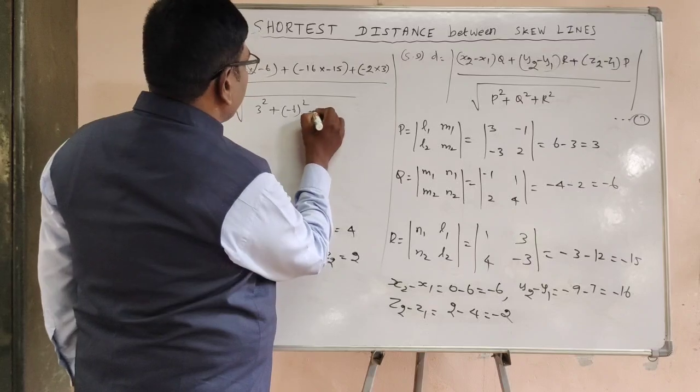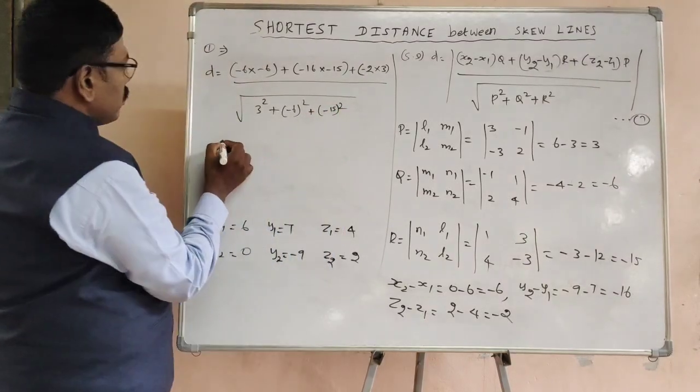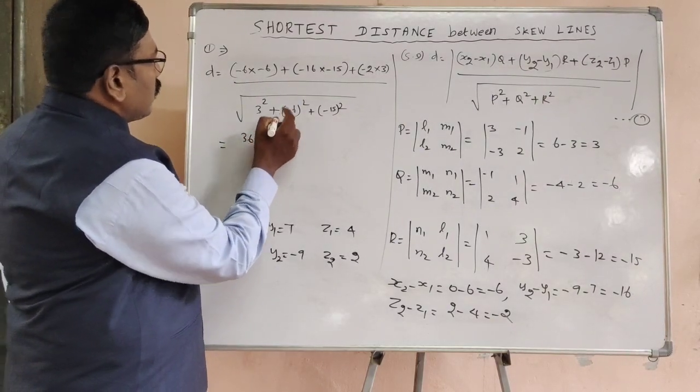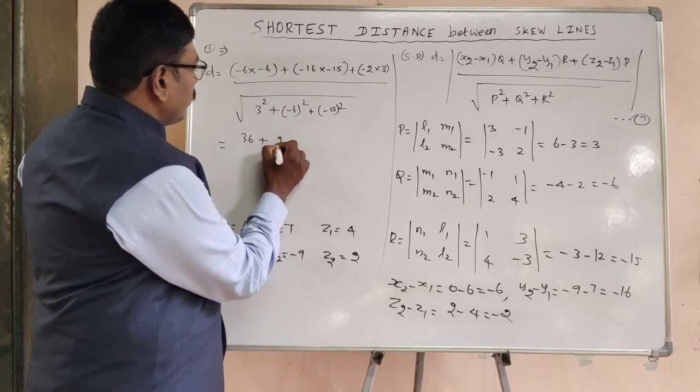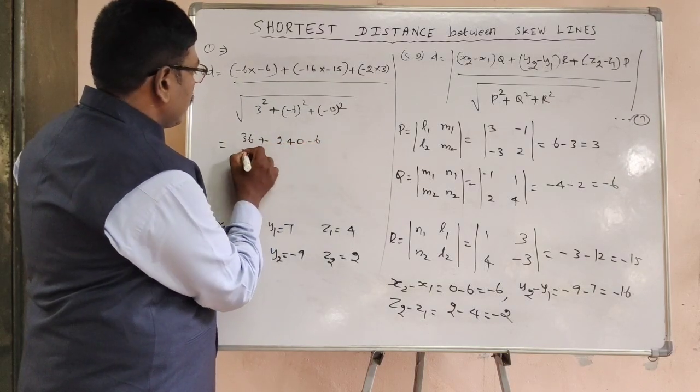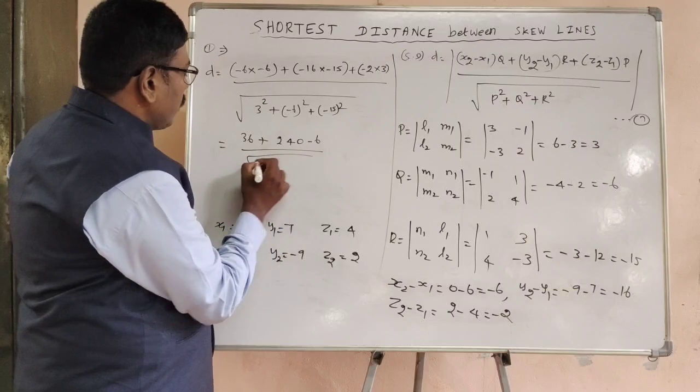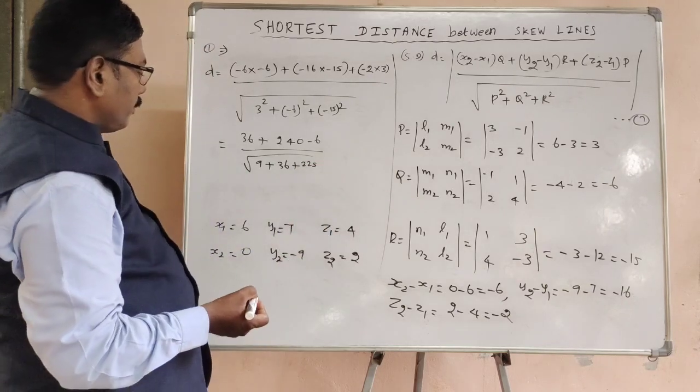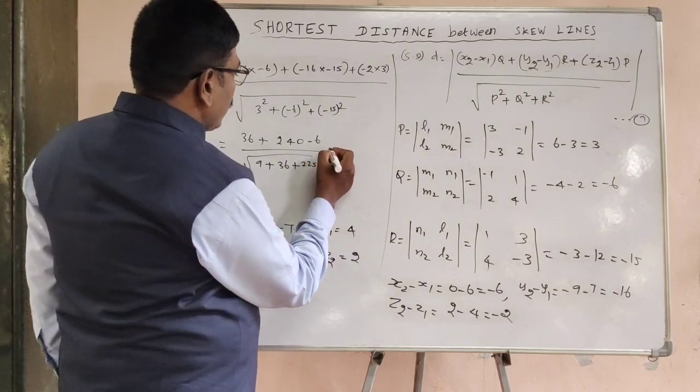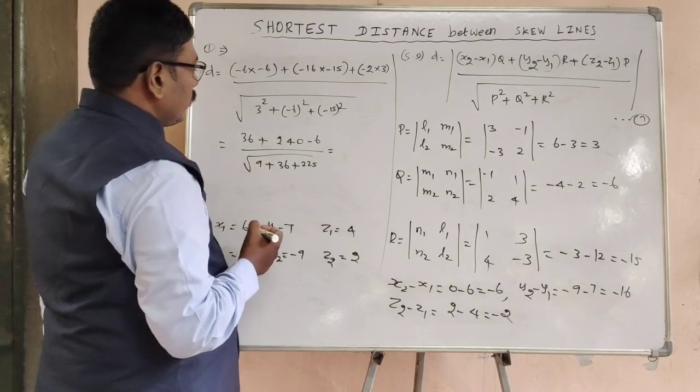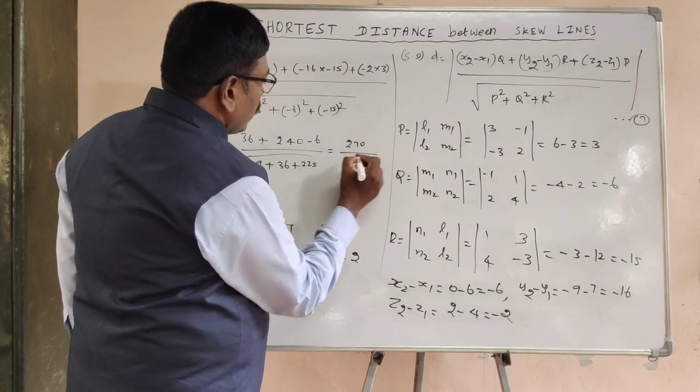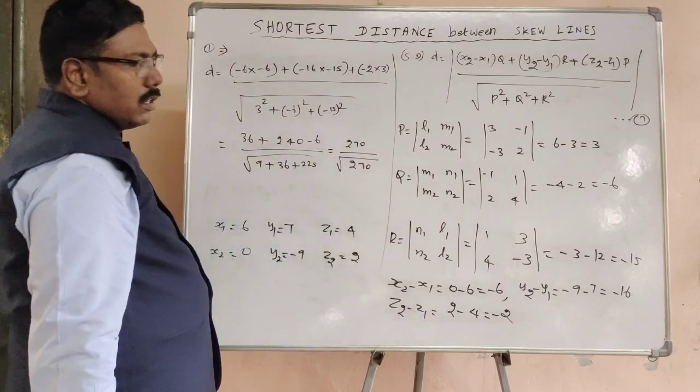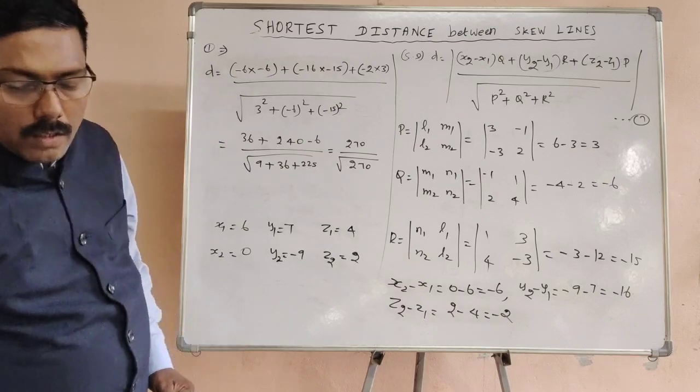Which is equal to minus 6 into minus 6 is 36, plus 16 into 15 is 240, minus 6, divided by root of 9 plus 36 plus 225. Which is equal to 270 divided by root of 270.